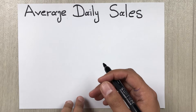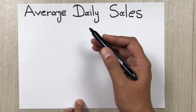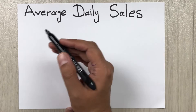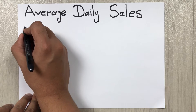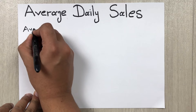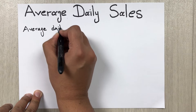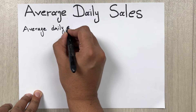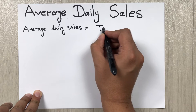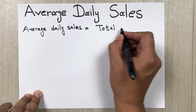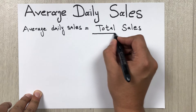Hello guys, I hope you are doing really well. In today's video I'm going to show you how to calculate average daily sales. The formula to find the average daily sales is: average daily sales is equal to total sales divided by number of days.